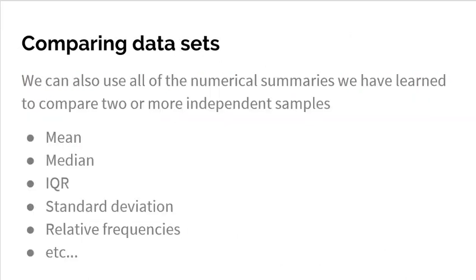We could also use all the numerical summaries we've learned to compare two or more independent samples. We could say that group has a mean of this, and that group has a higher mean of that. Same thing with median, IQR, standard deviation, relative frequencies — all of these can be used when we compare data. Keep in mind that we need to actually compare. I get many times where students will just list characteristics about data set A, list characteristics about data set B, and stop there. That's not comparing. We want to see greater than, less than, this is the same as this. Make sure you're comparing in context.